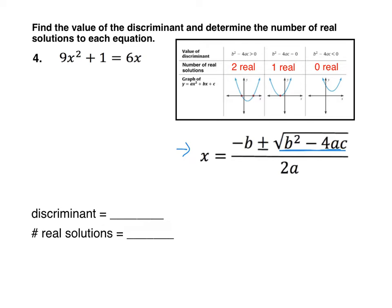Before we use the formula for the discriminant, we do need to have our equation written in standard form. So let's subtract 6x from each side and now we have 9x squared minus 6x plus 1 equals 0.